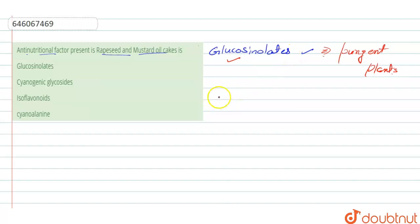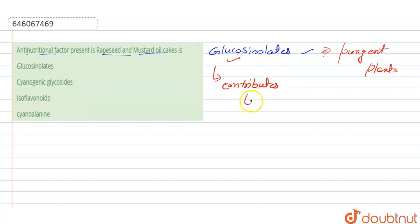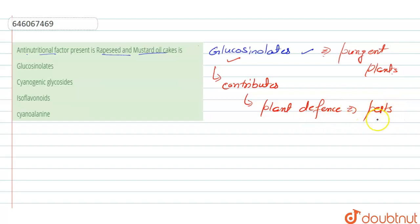So the anti-nutritional factor present in linseed and mustard oil cakes is glucosinolates. These are natural chemicals most likely to contribute to plant defense against pests and also against some diseases related to plants.